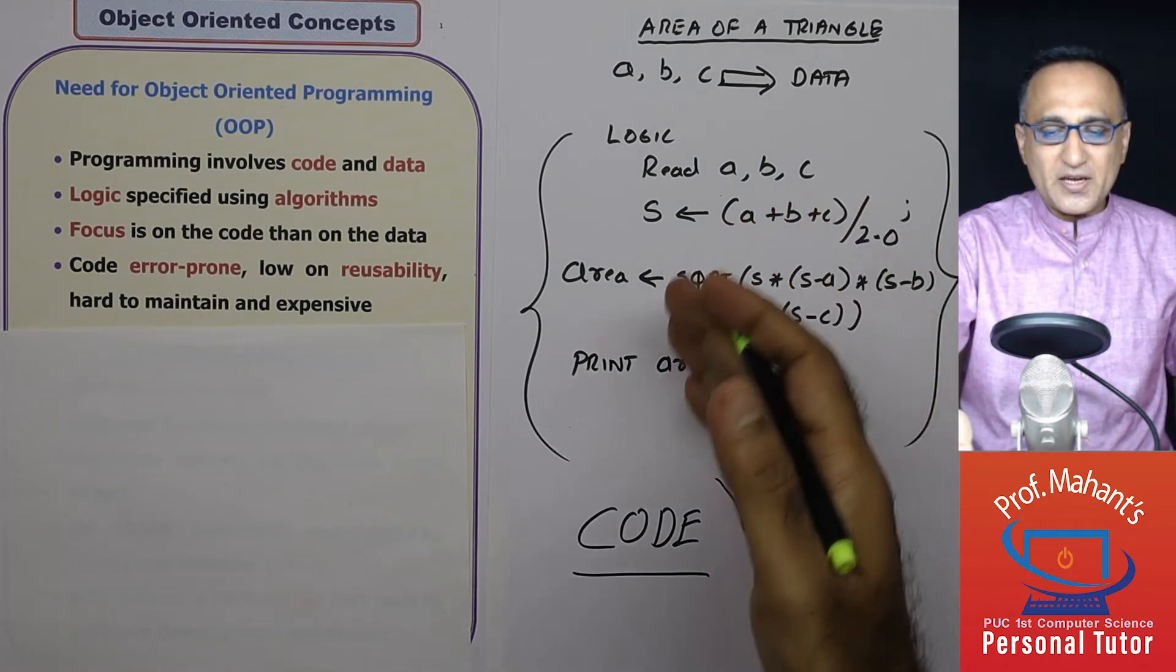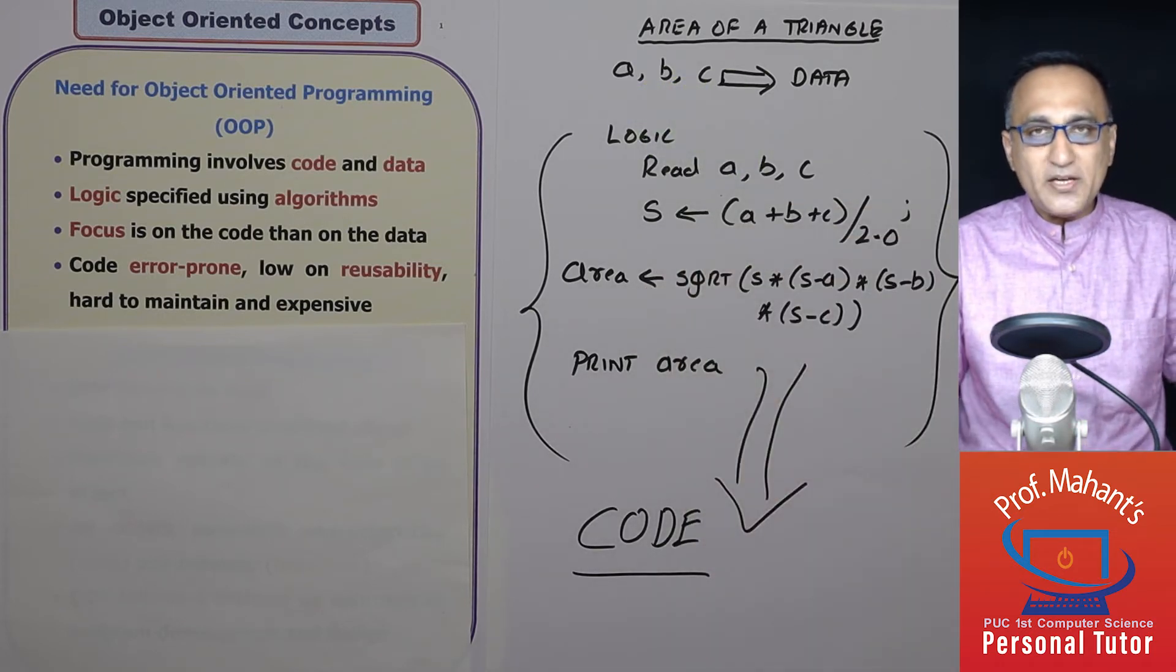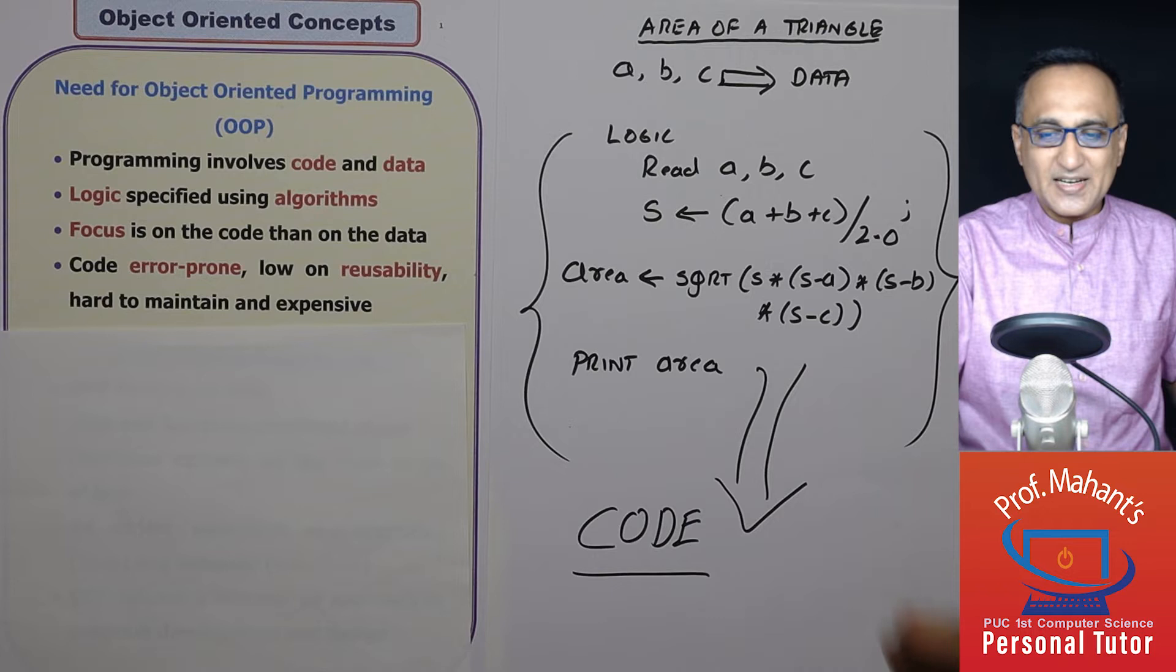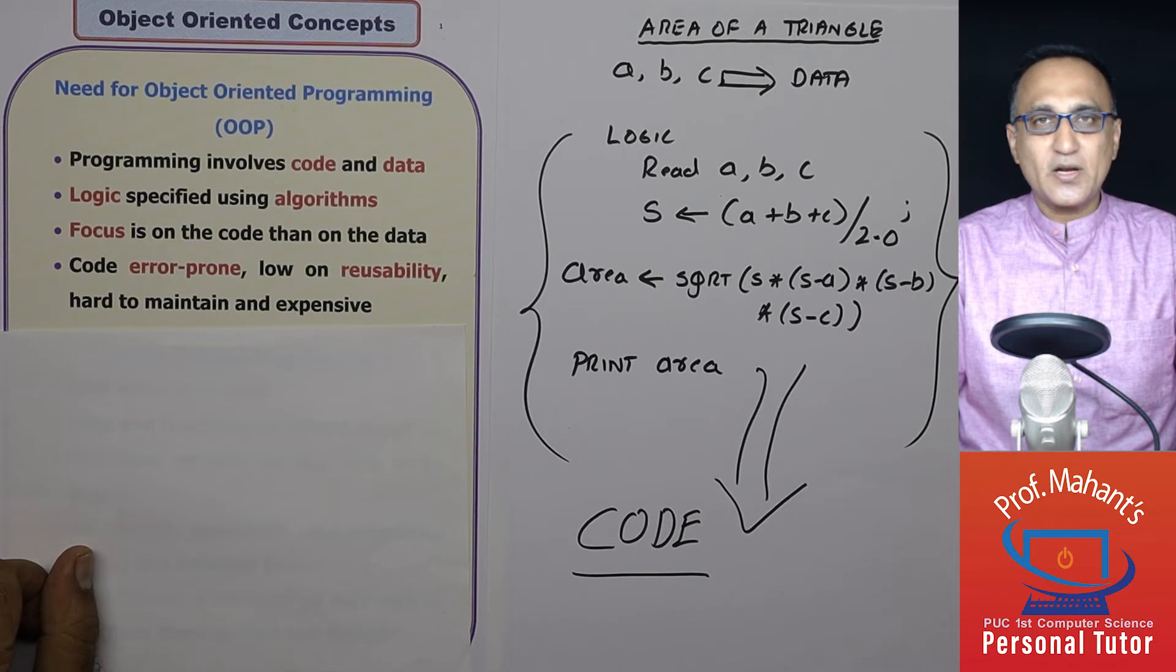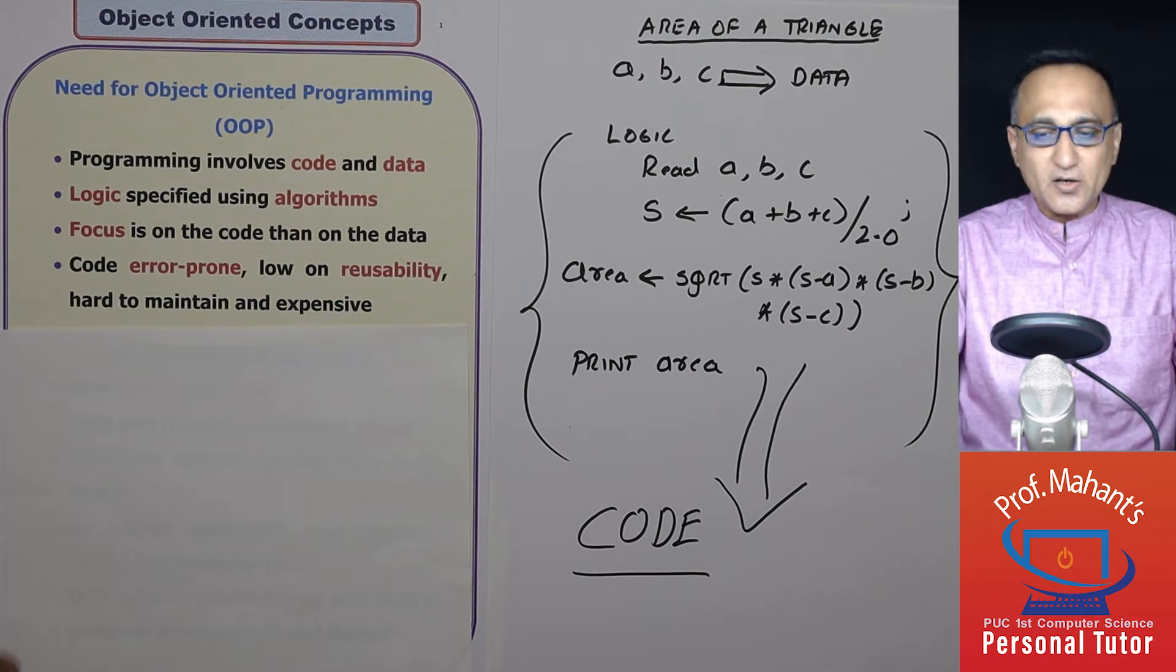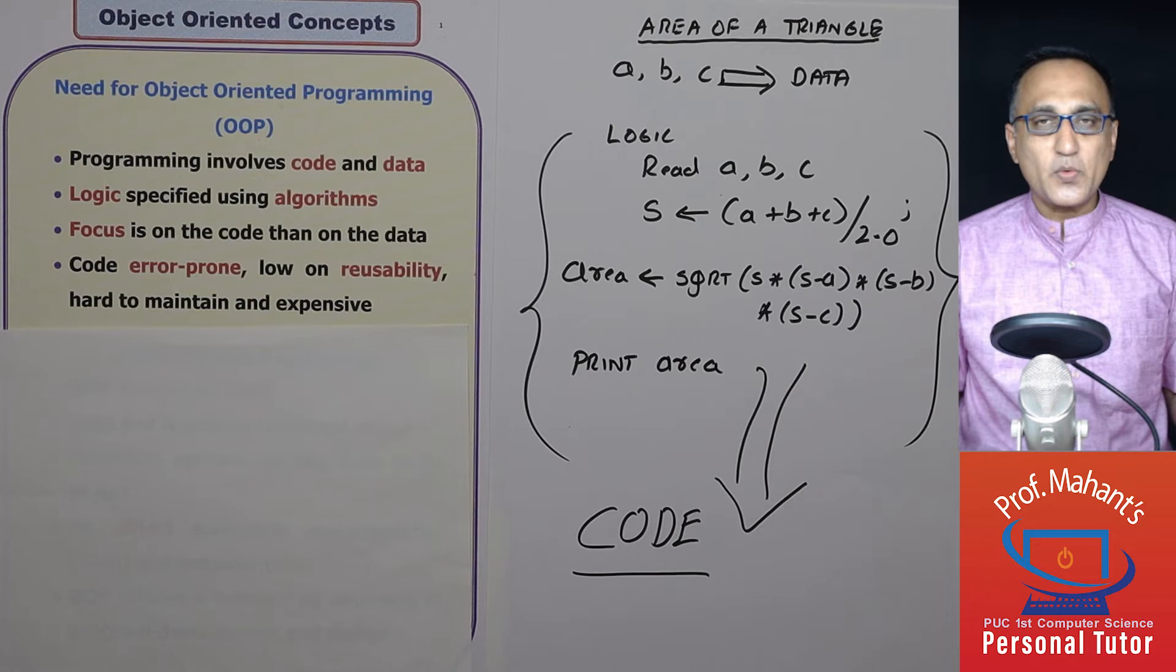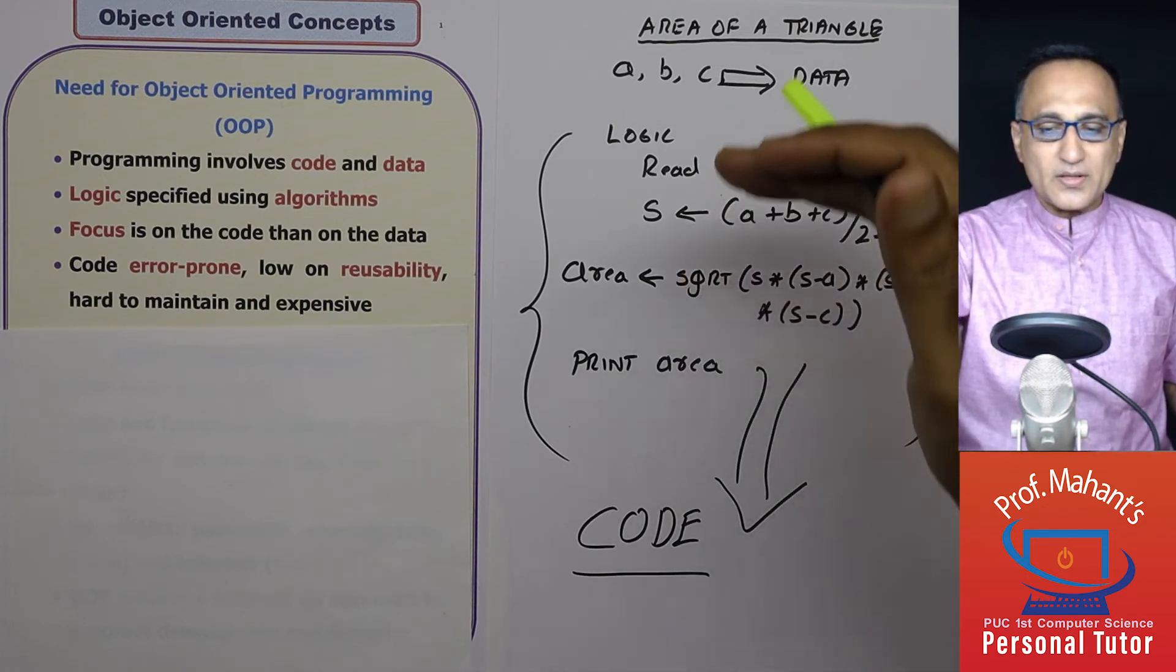Whereas if you look at it, logic has no meaning without the existence of data. You have code only because there is data. Suppose I tell you print the marks card of all the students of your class. For that, the most important thing I need is data of the scores of each student. Without data, there is no point in me writing the code.